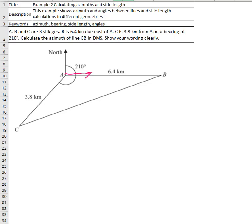Due east means going to the east, and consequently, the azimuth of line AB equals 90 degrees. And we are already given that the azimuth of line AC is 210 degrees.